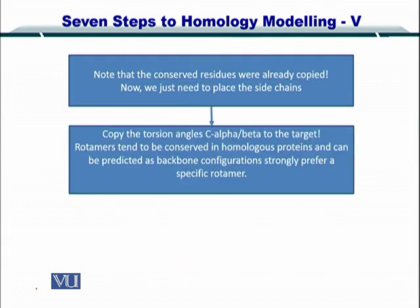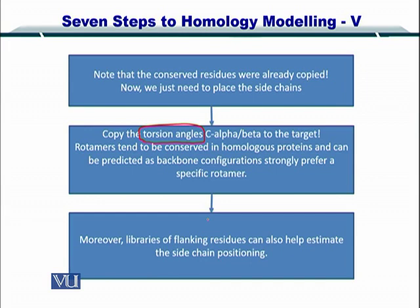The method is quite simple. We insert these side chains by copying the torsion angles — that is the alpha carbon and beta carbon angles — to the target. Rotamers tend to conserve these angles in homologous proteins. Because of that, there are certain preferences of amino acids, and libraries have been built to show which neighboring residue can be used to estimate the side chain position.